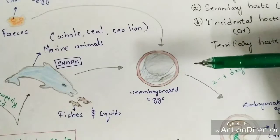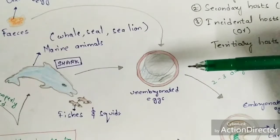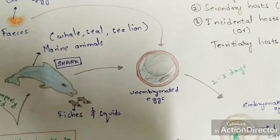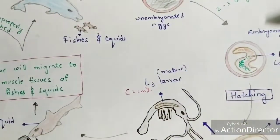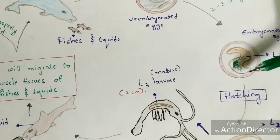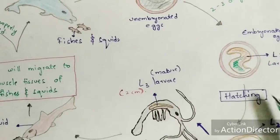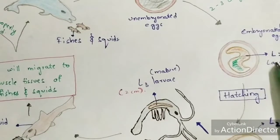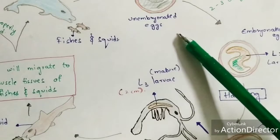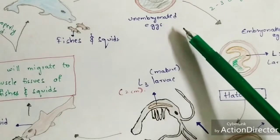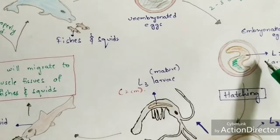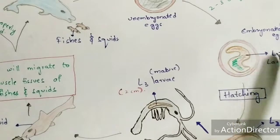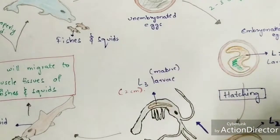The egg is called unembryonated because larvae are not present inside its cytoplasm. Within two to three days, the unembryonated egg transforms into an embryonated egg. It is called embryonated because larvae - specifically L2 larvae - are now present inside the cytoplasm of the egg.